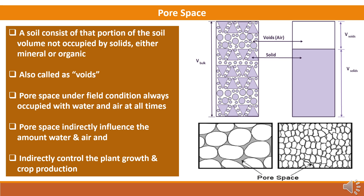Here we will study about pore space. Pore space is the portion of the soil volume not occupied by solids — either minerals or organic matter. These are the free spaces and are also called voids. Under field conditions, pore space is occupied by water and air at all times. Pore space indirectly influences the amount of water and air, and indirectly controls plant growth and crop production.